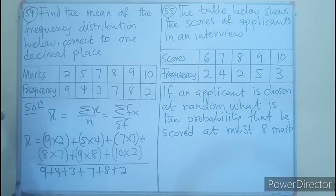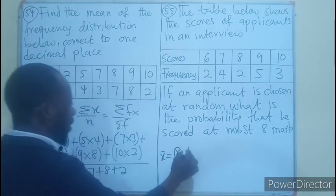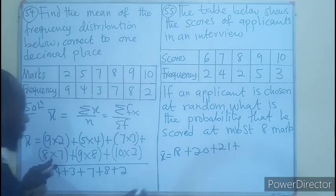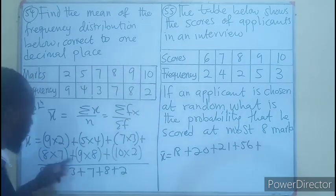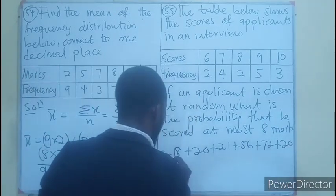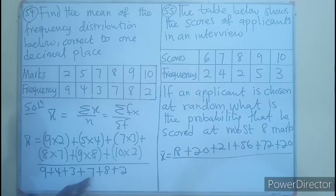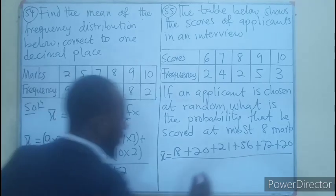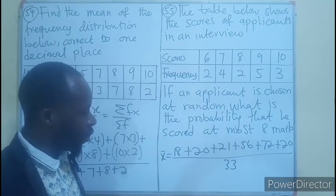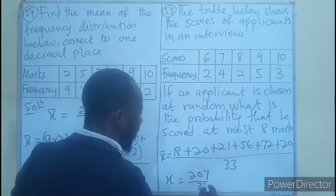So in here, let me use this. I'll be having 18, 20, 21, 56, 72, plus 20. And if we add all this, 10, 20, 33. So the denominator is 33. And if we add all this together, you'll be having 207. So this will be 207 divided by 33.